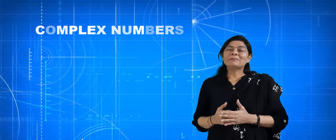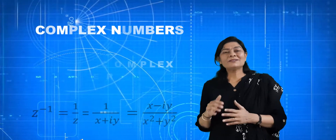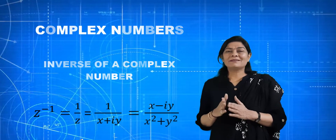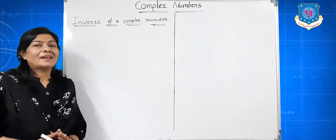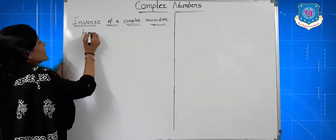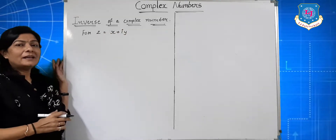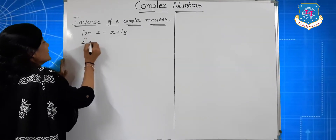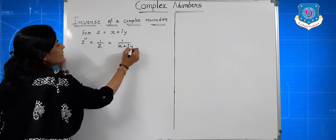Hello everyone, Marcel Pauna Thakkar. In complex numbers, today we will look at the inverse of a complex number, denoted by z inverse, which is equal to 1 upon z. The inverse of a complex number means the reciprocal of a complex number. For z equal to x plus iy, the inverse is z inverse equal to 1 upon z, which is equal to 1 upon x plus iy.